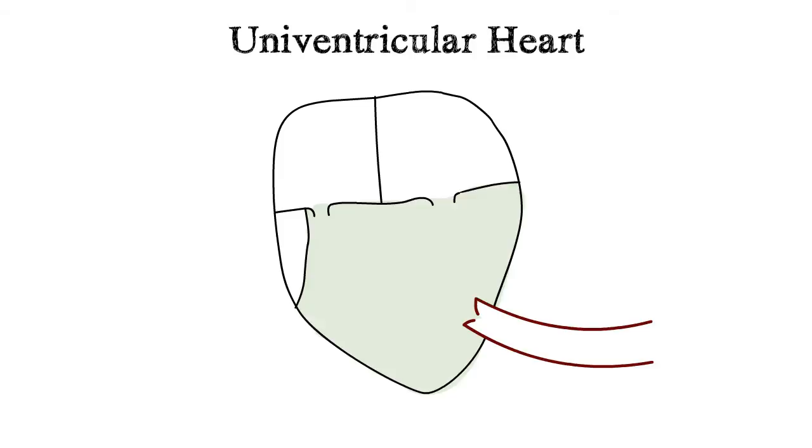A hole between the right and left atria causes red oxygenated blood and blue non-oxygenated blood to mix together before flowing into the ventricle and then the body.